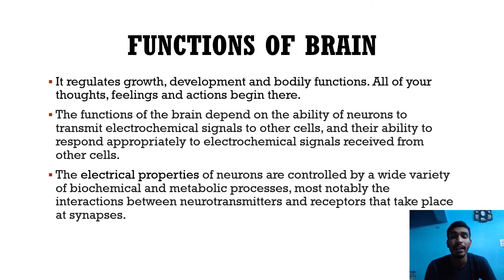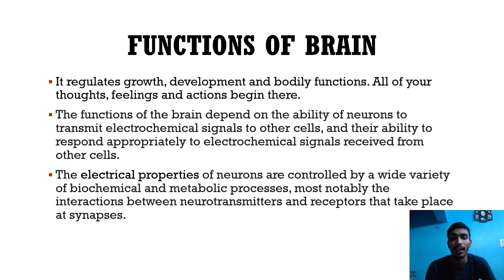Functions of the brain: it regulates growth, development, and bodily functions. All your thoughts, feelings, and actions begin there. Brain functions depend on the ability of neurons to transmit electrochemical signals to other cells and to respond appropriately to signals received from other cells. The electrical properties of neurons are controlled by biochemical and metabolic processes, most notably the interactions between neurotransmitters and receptors that take place at synapses — the gap between two neurons.